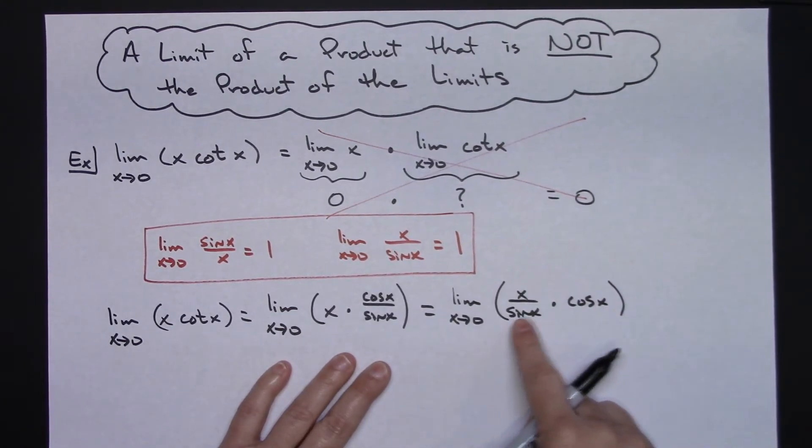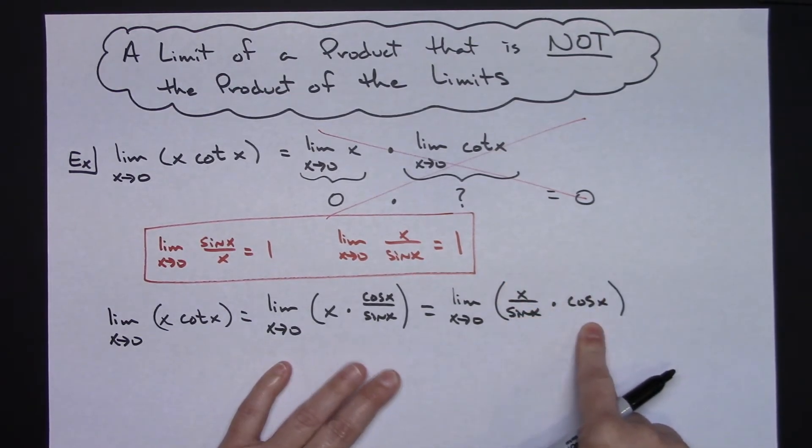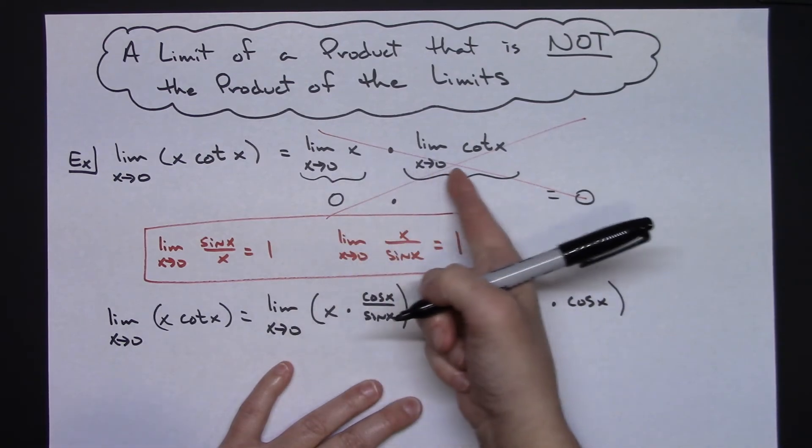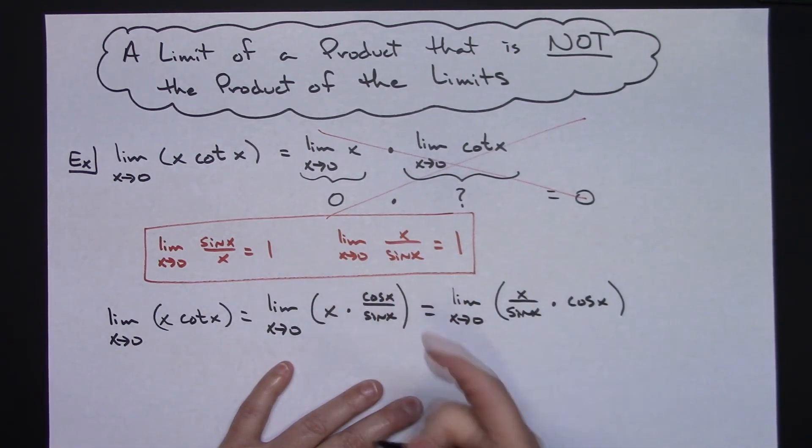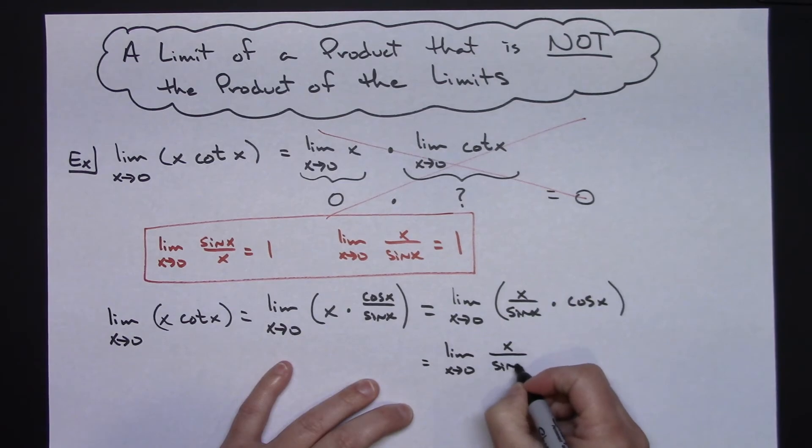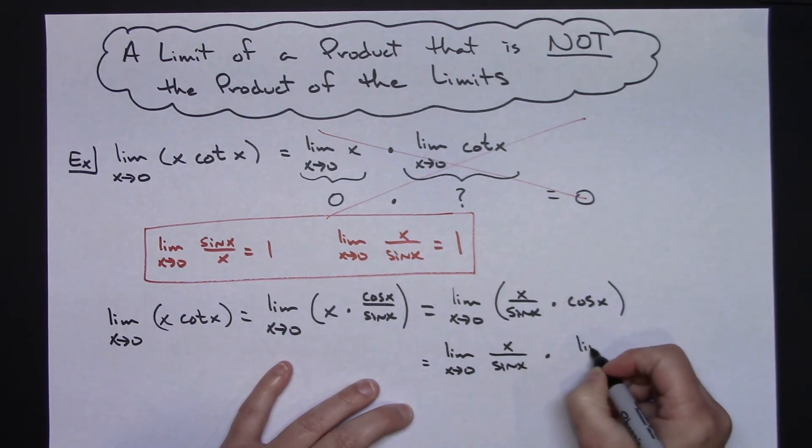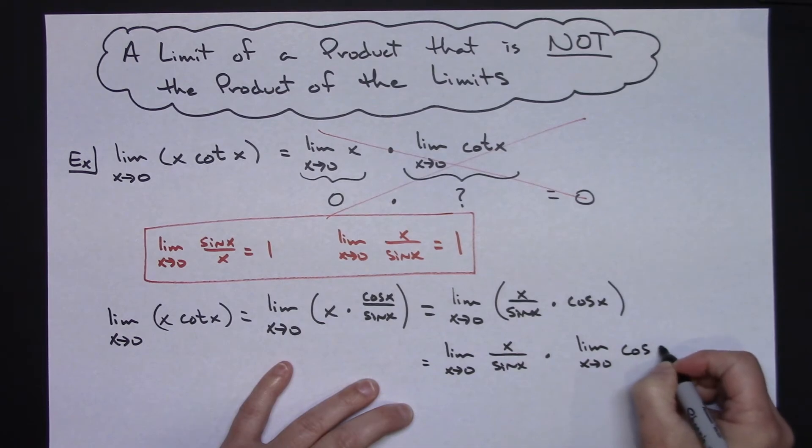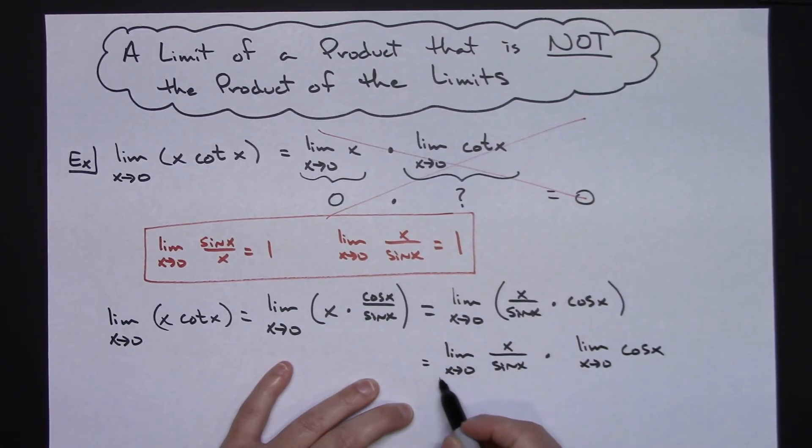And then from there, now, I've got that product thing going on. I know this exists. I know this exists. So then I can apply the property, the theorem that I tried to apply up there. We can do the limit as x approaches 0 of x over sine x times the limit as x approaches 0 of cosine x.